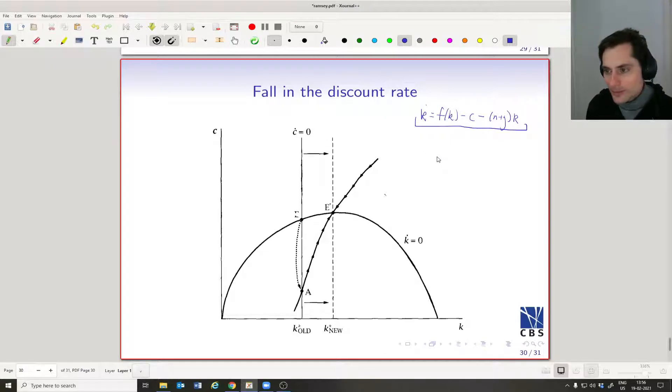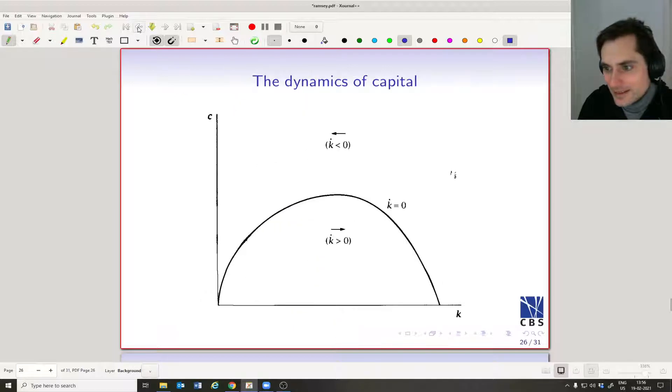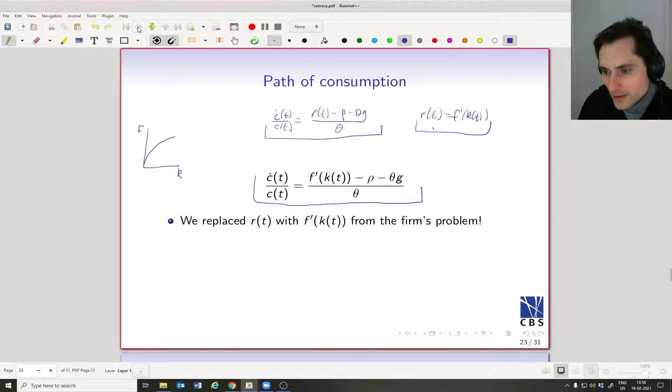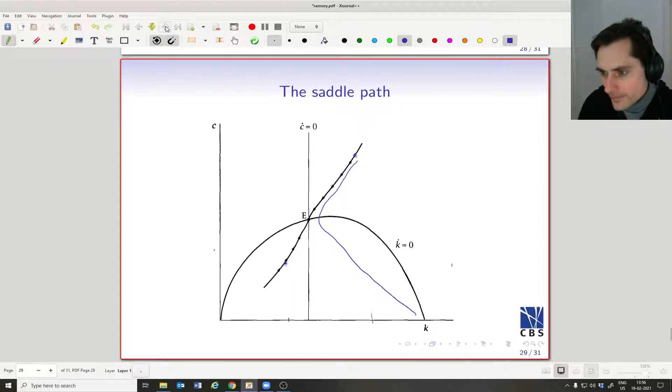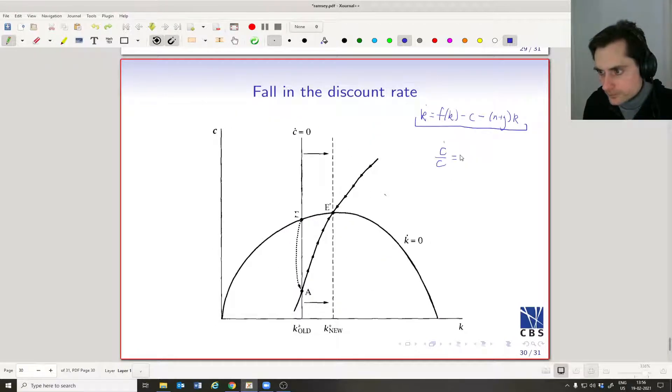What about c-dot? So I'm going to get it wrong here, but I think little c—we got c-dot divided by c. It's equal to ρ—oh boy, I'm going to screw it up, so I better flip back a couple of slides. Okay, if you look at it—screwed up already—f'(kt) minus ρ minus θg divided by θ. Note we do have a ρ here.